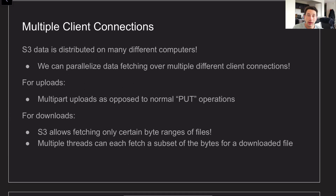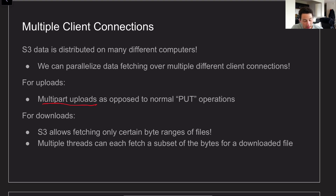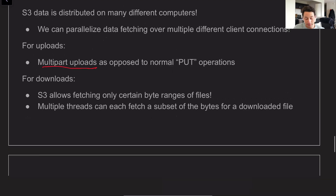Another thing to note is using multiple client connections for parallelization. On a single client, you can use multi-part uploads to write to multiple different data nodes simultaneously. Similarly, when reading, if a file was a multi-part upload you can read parts of it at a time, or you can even fetch specific byte ranges of a file. This means that if you only care about certain bytes, you only read those — and it's faster. You can also spin up multiple threads reading different byte ranges and then aggregate them together on the client.